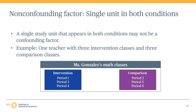Here is an example of a single unit that appears in both conditions. Ms. Gonzalez teaches six math classes and implements a new math intervention in three of her six class periods. In her remaining class periods — the comparison classes — she teaches the regular curriculum. Although Ms. Gonzalez is the only teacher in the study, this is not a confounding factor because Ms. Gonzalez's teaching skills are present in both the intervention and the comparison group. Whether she is a fantastic teacher or a struggling teacher, she is teaching class periods in both conditions, essentially controlling for any teacher effects.